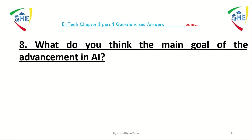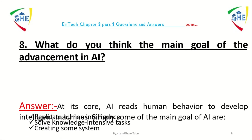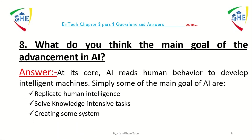Question number eight: what do you think is the main goal of the advancement in artificial intelligence? The main goals of artificial intelligence include replicating human intelligence, solving knowledge-intensive tasks, and creating expert systems.